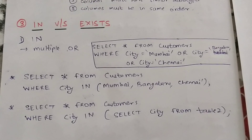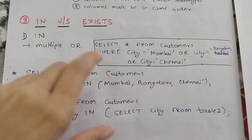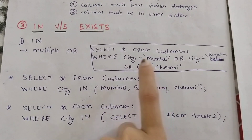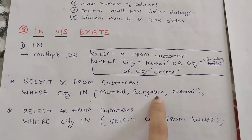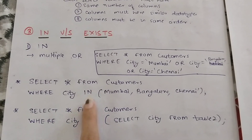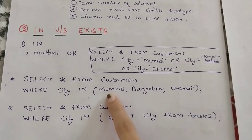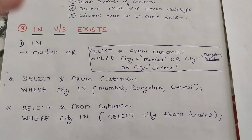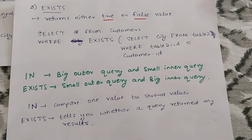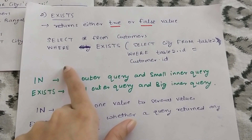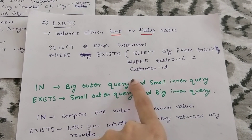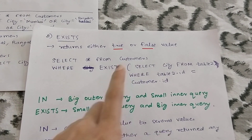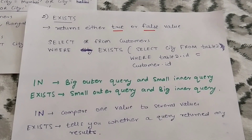The third topic is the difference between IN and EXISTS. IN is basically multiple OR. For example, instead of writing: SELECT * FROM customers WHERE city = 'Mumbai' OR city = 'Mangaluru' OR city = 'Chennai', you can write: SELECT * FROM customers WHERE city IN ('Mumbai', 'Bengaluru', 'Chennai'). Or, instead of a list, you could write a subquery: SELECT * FROM customers WHERE city IN (SELECT city FROM some_other_table). EXISTS returns either true or false. For example: SELECT * FROM customers WHERE EXISTS (SELECT city FROM table2 WHERE table2.id = customer.id). If the subquery returns any value, EXISTS returns true or false accordingly.